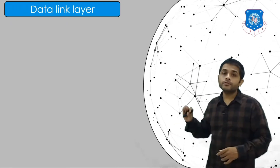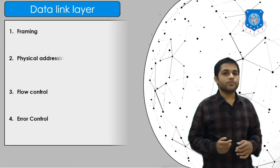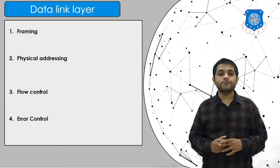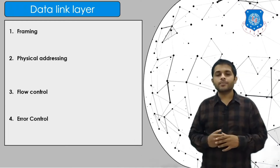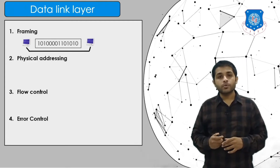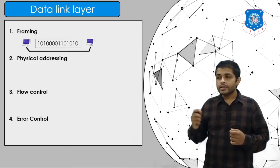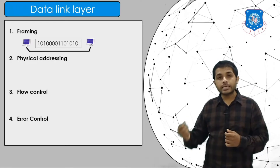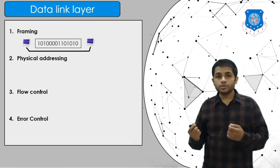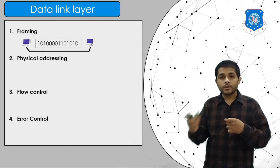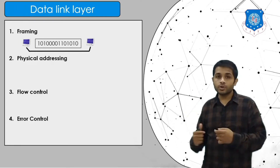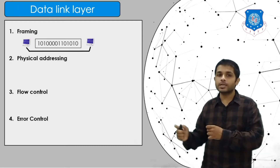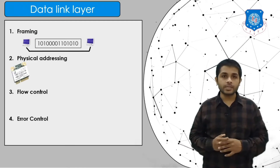The layer above the physical layer is called the data link layer. There are four responsibilities: framing, physical addressing, flow control, and error control. Framing: when two devices are sending data, there will be a stream of bits on the link, and the receiver needs to know where the data starts and ends. So the sender adds extra data at the start and end of the original data so the receiver can identify the boundaries of the data. That is called framing.